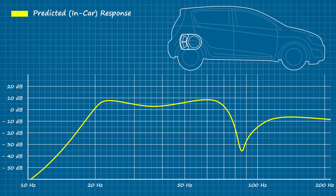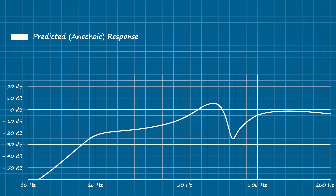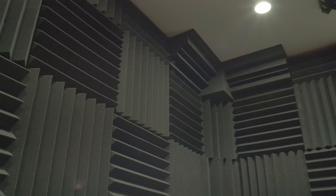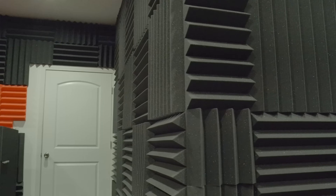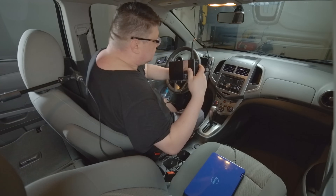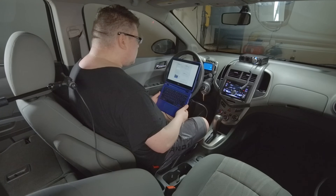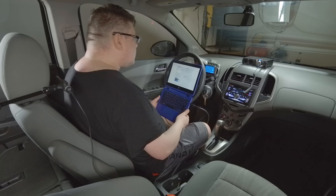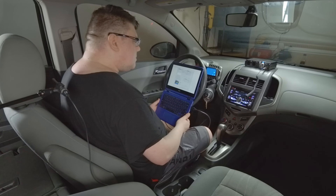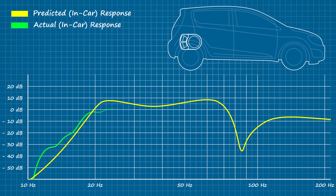Here's the predicted response of the bass tube sitting in the back of my Chevy Sonic hatchback, and here it is with the vehicle altogether removed from the simulation, leaving the enclosure to radiate out into an empty space. As you can see, the anechoic response isn't very practical — it wouldn't be, as it illustrates the enclosure operating in an environment much different from the one it was modeled for. I decided to use the Zoom UAC-2 audio interface to feed a clean signal directly into the auxiliary inputs on the head unit. So here comes the sweep.